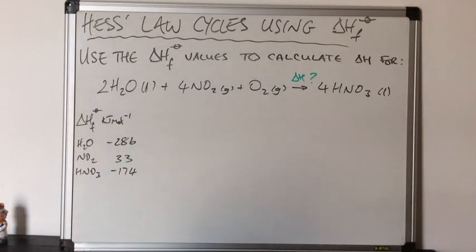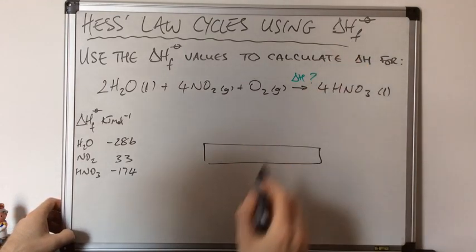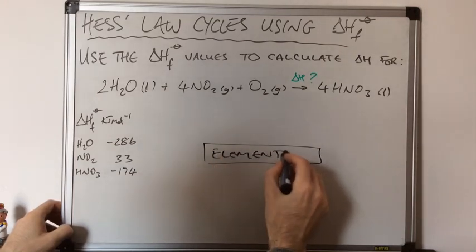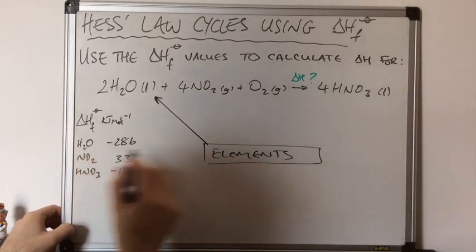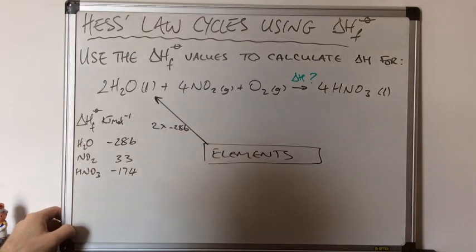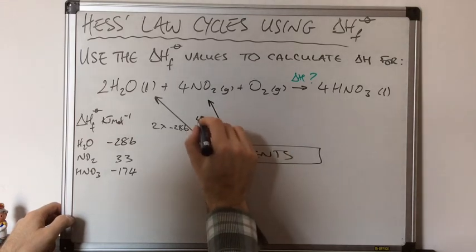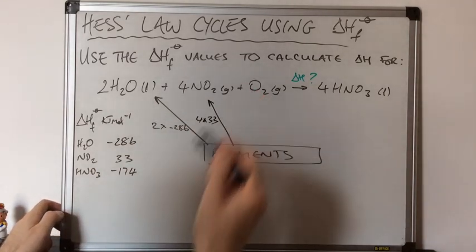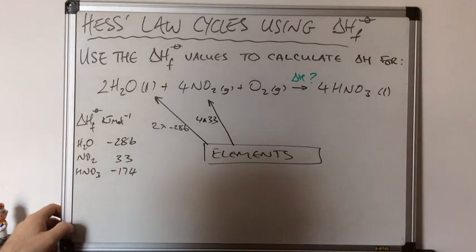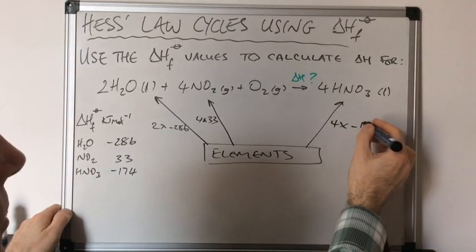We'll look at one more example, starting with the elements box at the bottom because we're using formations. To form two moles of water from elements: two times minus 286 kJ/mol. To form four moles of NO₂: four times 33 kJ/mol (since 33 is the value for one mole). Oxygen is an element so it has zero enthalpy change of formation, and to form four moles of HNO₃: four times minus 174 kJ/mol.